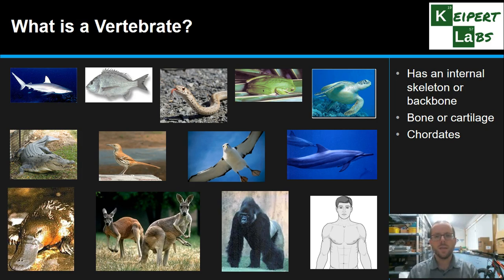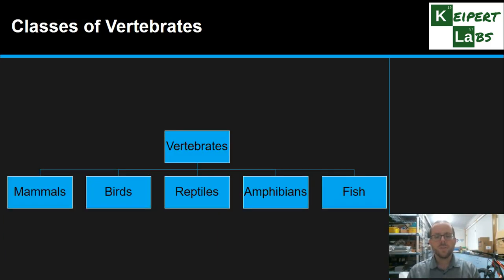There are five main classes of vertebrates that we're going to focus on: mammals, birds, reptiles, amphibians, and fish.